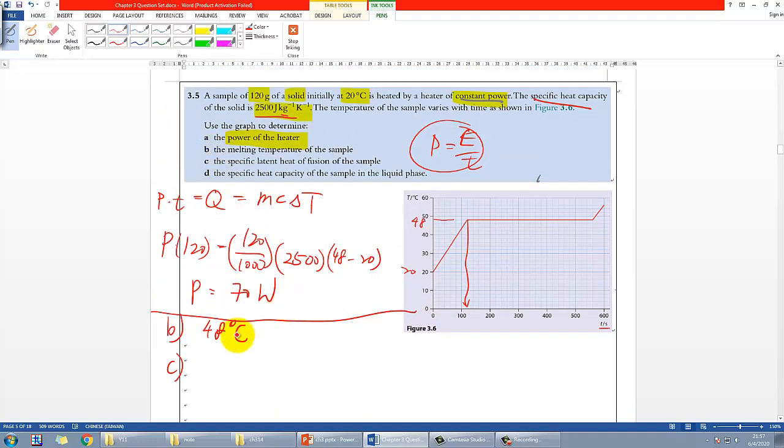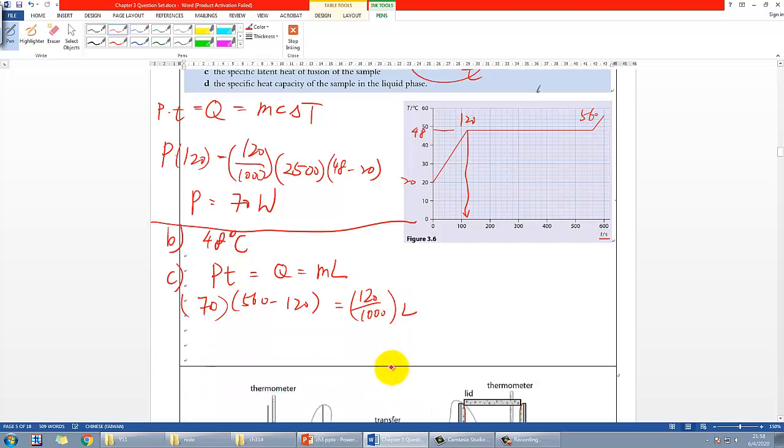For part c, specific latent heat of fusion. Apparently it's a very simple calculation that even if you finish IGCSE you should know - once again, the energy it takes is power times time, and that would equal to the thermal energy, which this time is related to latent heat, so ml. For the power we already know is 70 watts. For the change of state, we have to look up the time here, which again is 120, and this one should be 560, so 560 minus 120 is the time. That will be equal to energy, and the mass should still be the same, and therefore we can calculate the only one unknown l here.